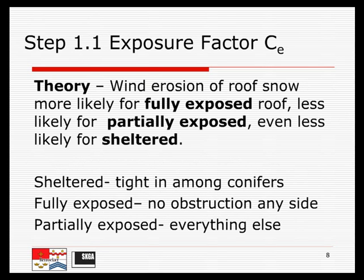The other part is how the structure is situated within its terrain. Wind erosion of the roof snow is more likely for a fully exposed roof, less likely for a partially exposed roof, and even less for a sheltered roof. An example of a sheltered roof is something situated tight among conifers — non-deciduous trees, that is, trees that keep their leaves. Trees that lose their leaves in the wintertime are deciduous, so we're talking about conifers as non-deciduous trees.